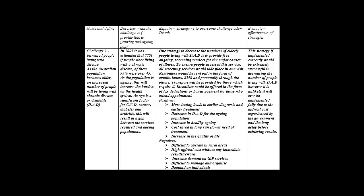Firstly, it's apparent that as people become older, there will be more people living with chronic disease and disability — I've shortened this to DAD so I don't have to write it in full during exams. I then give a statistic: in 2005, it was estimated that 77% of people were living with a chronic disease, and of these, 95% were over 45. This proves that there are increased people living with disease due to the Australian aging and growing population.